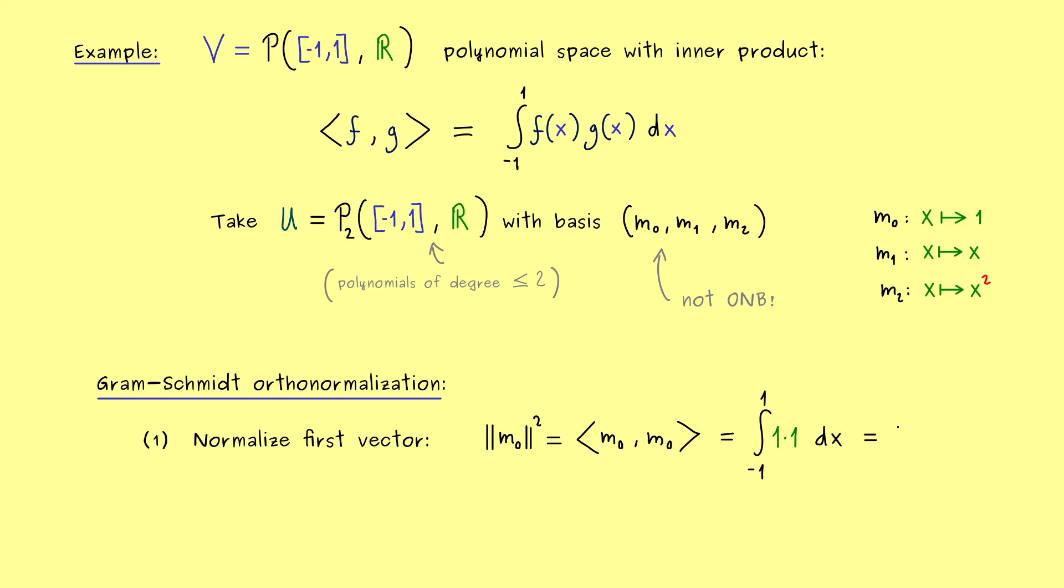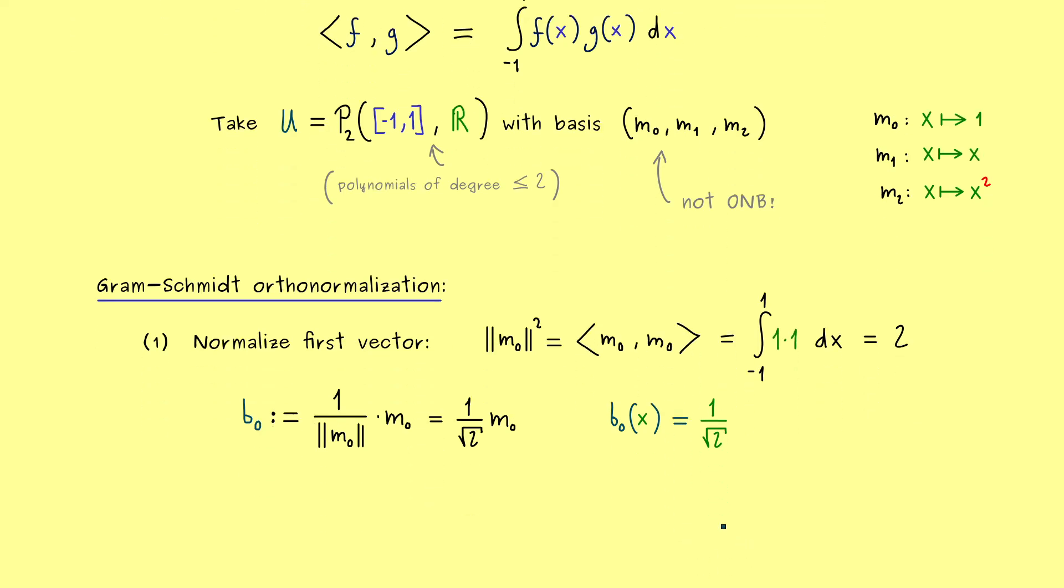Hence our first new basis element, which we now also call B0, is now given as 1 divided by this norm times m0. So just 1 over the square root of 2 times the monomial. Hence B0 of x is just given by the constant function, but not with the constant 1. Now the constant is 1 over the square root of 2.